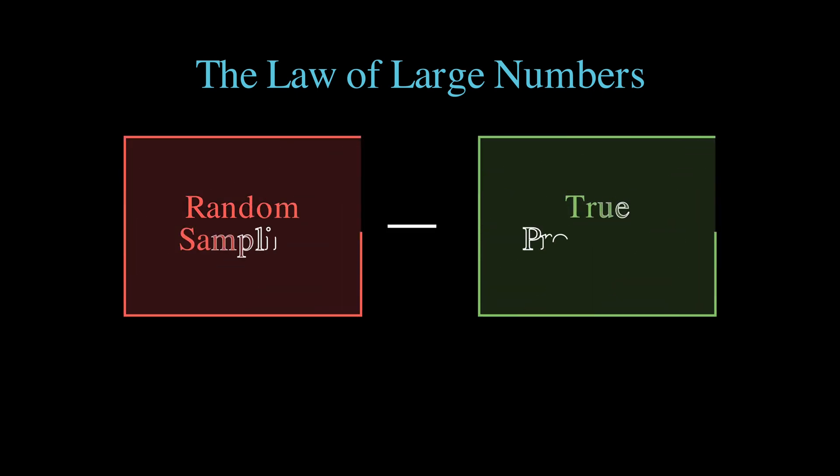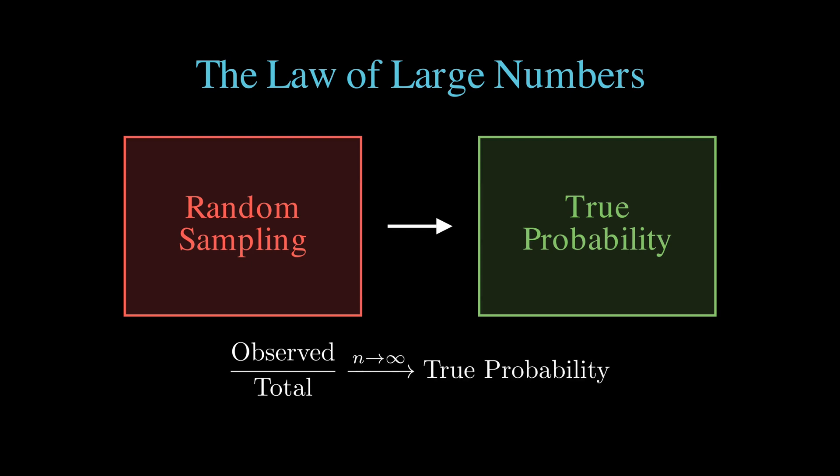It's guaranteed by something called the law of large numbers, which tells us that as we take more and more random samples, our observed frequency will get closer and closer to the true probability. It's like nature has this built-in mechanism where randomness, when you have enough of it, becomes predictable.